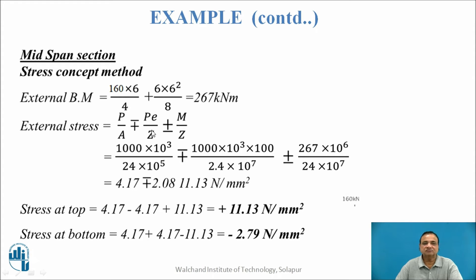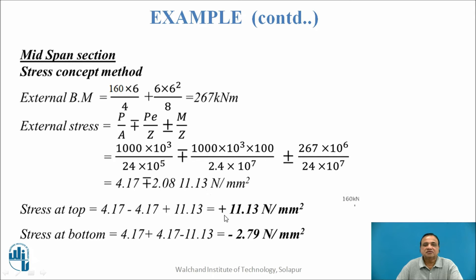The stress formula is P/A ± P×e/Z ± M/Z, where M is the total external bending moment. Total bending moment = WL/4 (due to point load) + WL²/8 (due to UDL) = 267 kN·m. Taking the algebraic sum, stress at top = 11.13 N/mm² and stress at bottom = −2.79 N/mm².